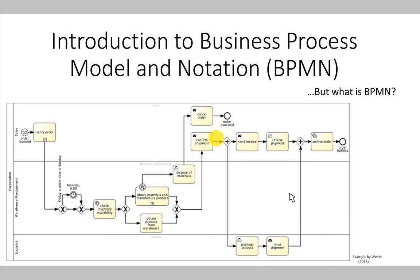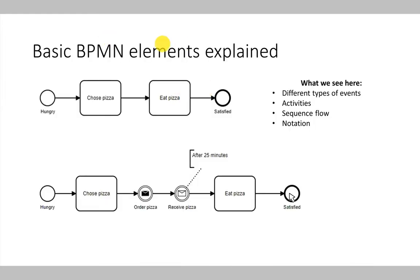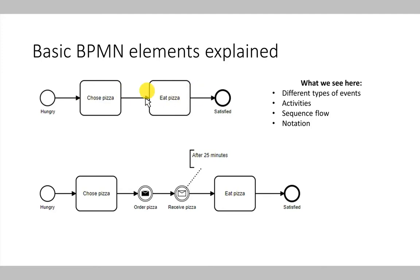In the following video I will introduce you to the basic concepts of BPMN. The basic BPMN elements we see on the slide are events, sequence flows, and activities. An activity is represented by a rectangle with rounded corners — for example, choose a pizza or eat a pizza. Activities are connected in the process using sequence flows, which are simply small arrows connecting activities. Each activity needs to be connected to an ingoing and outgoing sequence flow.